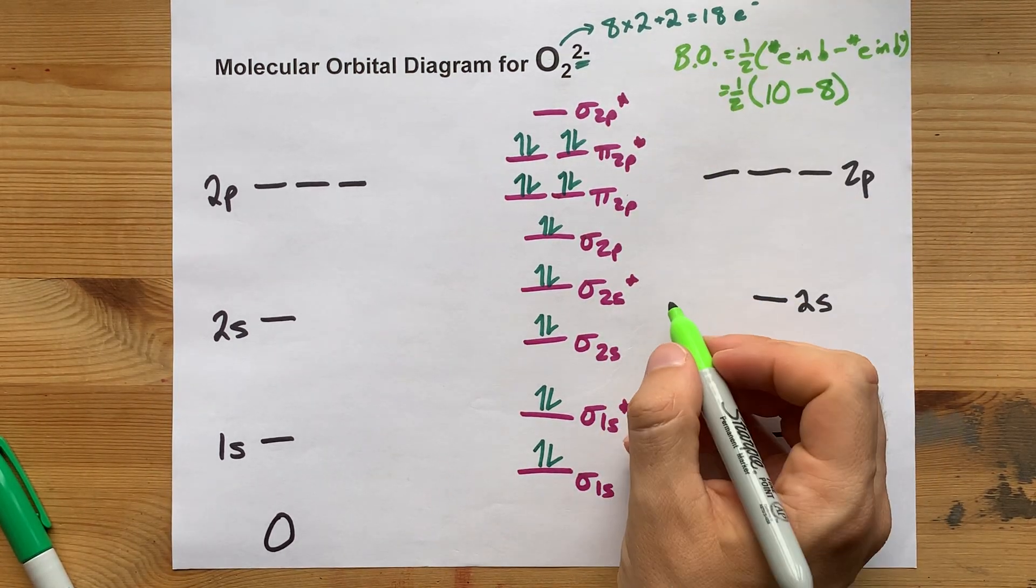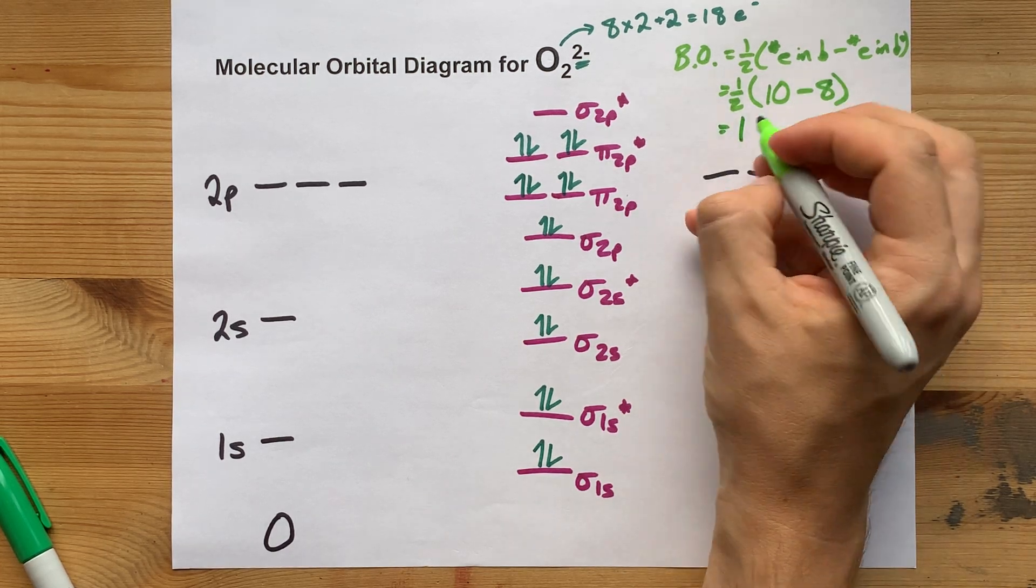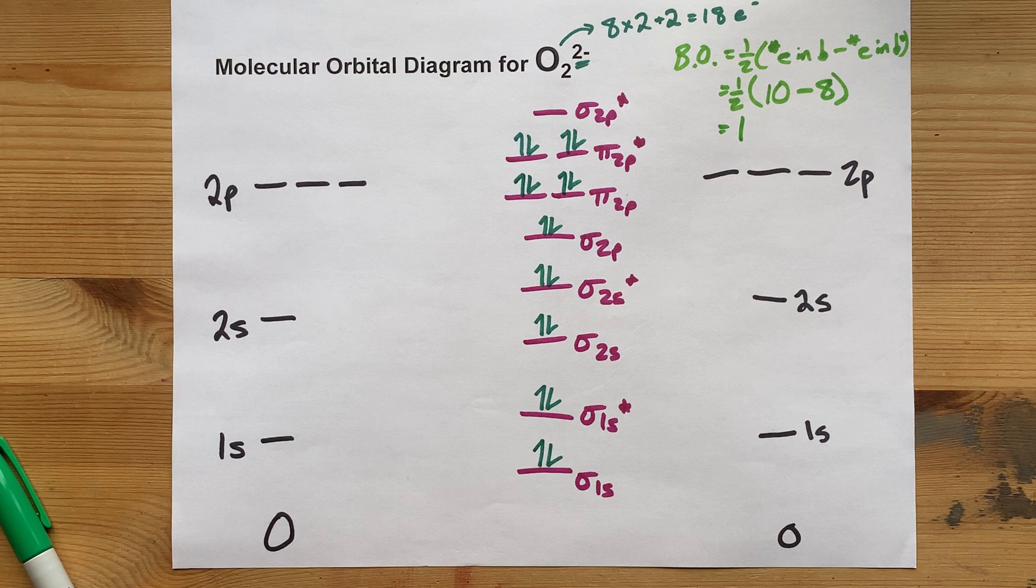10 and 8 make 18 total. 10 minus 8 is 2. Half of that is 1. The bond order here is 1.